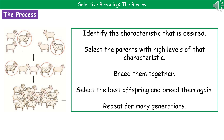We then breed them together and select the best offspring and breed those again. In their offspring, some had lots of wool and others didn't. So we select the ones with the most wool, breed them together, and when you continue this for many generations, eventually we end up with all of the sheep being very woolly.